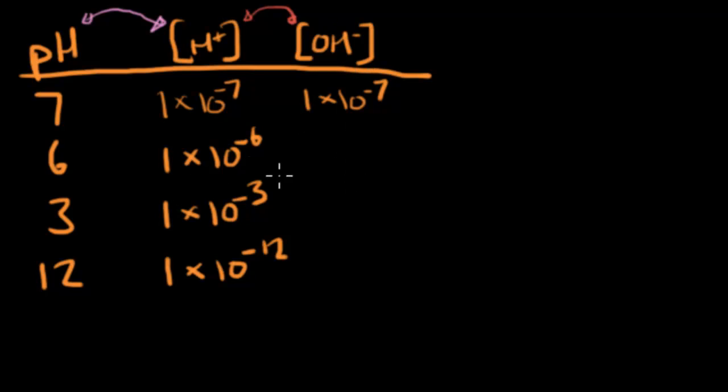So for pH 6, where my hydrogen ion concentration is 1 times 10 to the negative 6th, my OH is going to be 1 times 10 to the negative 8. For pH 3, my OH concentration is going to be 1 times 10 to the negative 11. Are you starting to see a pattern yet? Let's do one more. pH 12 is going to give us an OH minus concentration of 1 times 10 to the negative 2nd.